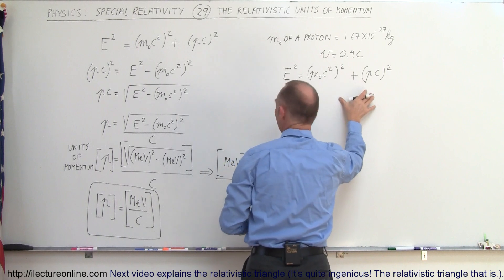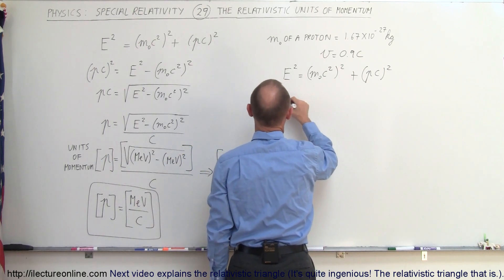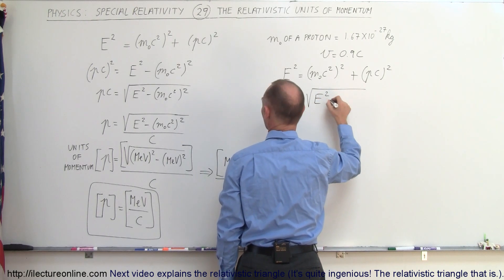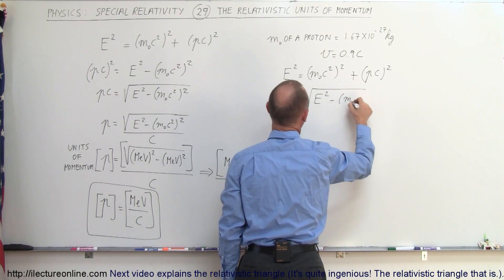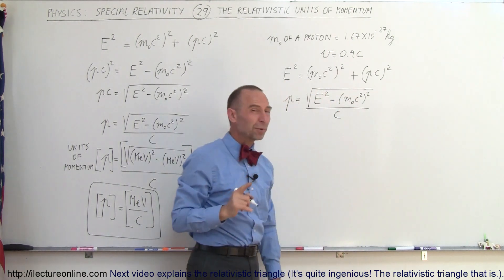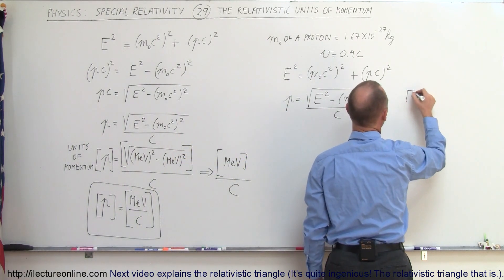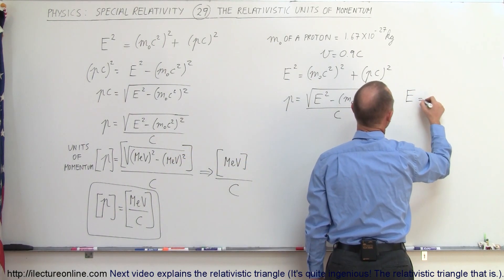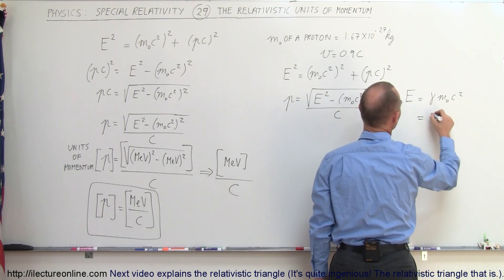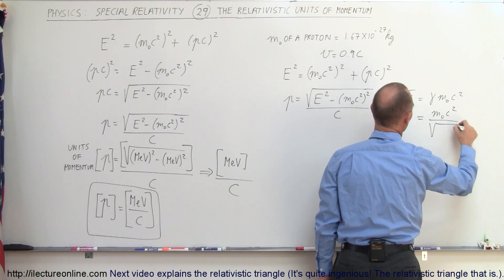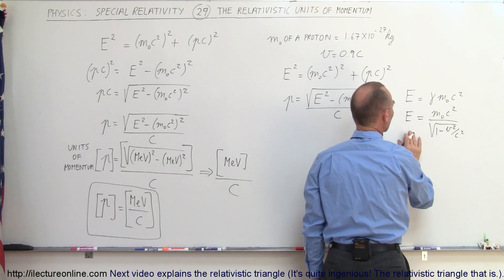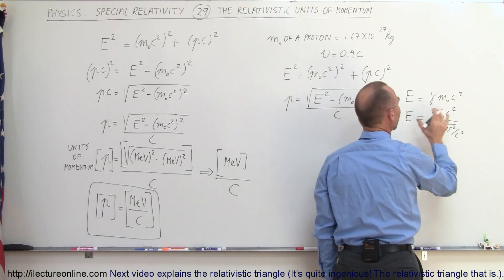When we take that equation and solve for P, we get that P is equal to the square root of the total energy squared minus the rest mass energy squared, all divided by C. We have to remember that the total energy can also be written as gamma times M-sub-naught C squared, where gamma is 1 over the square root of 1 minus V squared over C squared.